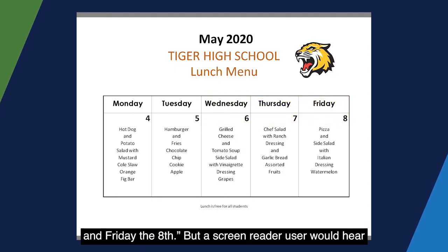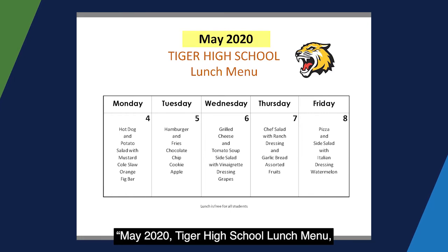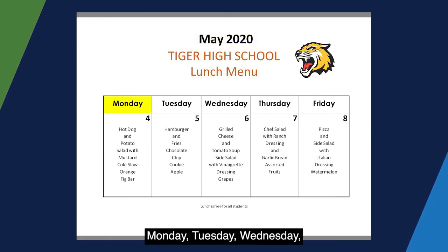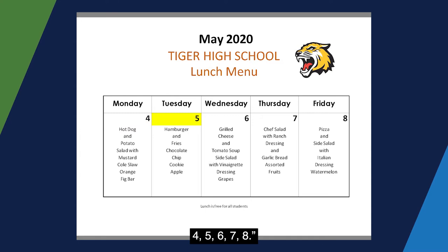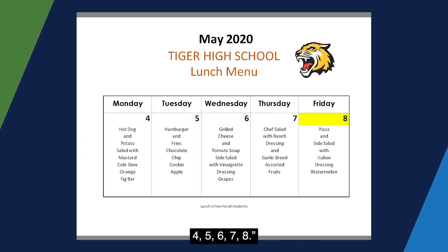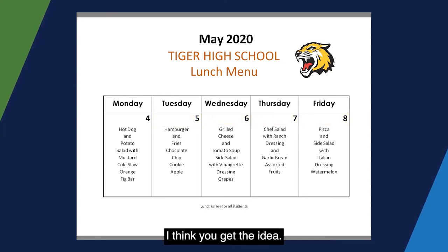But a screen reader user would hear May 2020, Tiger High School Lunch Menu, Monday, Tuesday, Wednesday, Thursday, Friday, 4, 5, 6, 7, 8, and so on. I think you get the idea.